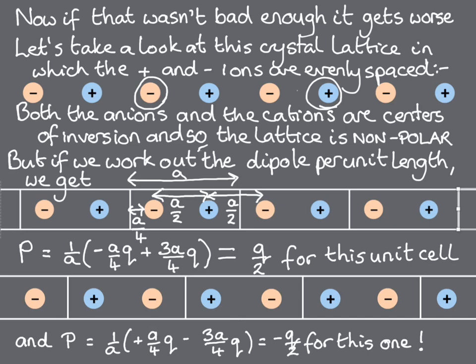And again, just as in the case for the polar lattice, if we made many choices of unit cells, we would find that we obtained many answers, all differing by integer multiples of q.